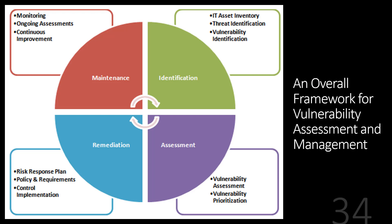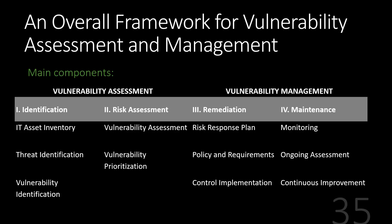Here's a visual framework that you can see in the text. This one uses a life cycle type approach: identify, assess, remediate, and maintain your management program for vulnerabilities and fraud. Here you can see it laid out in a table format. The vulnerability assessment takes place during the identification and risk assessment phase. Vulnerability management kicks in once you start to figure out the remediation for a potential fraud, and then maintaining that fraud management system going forward.